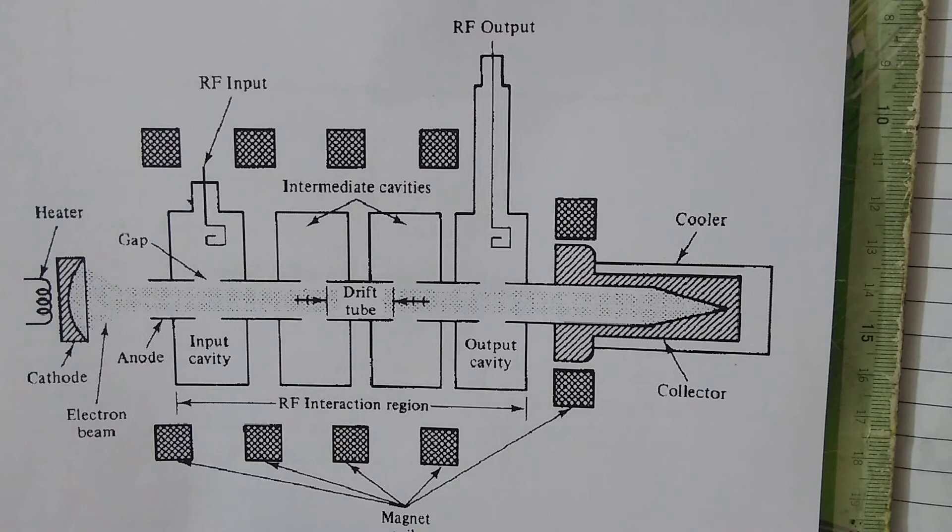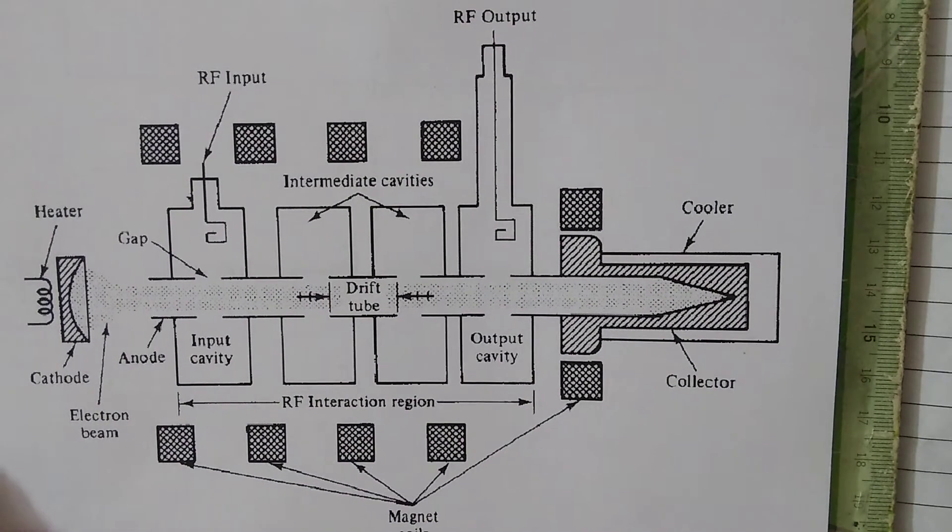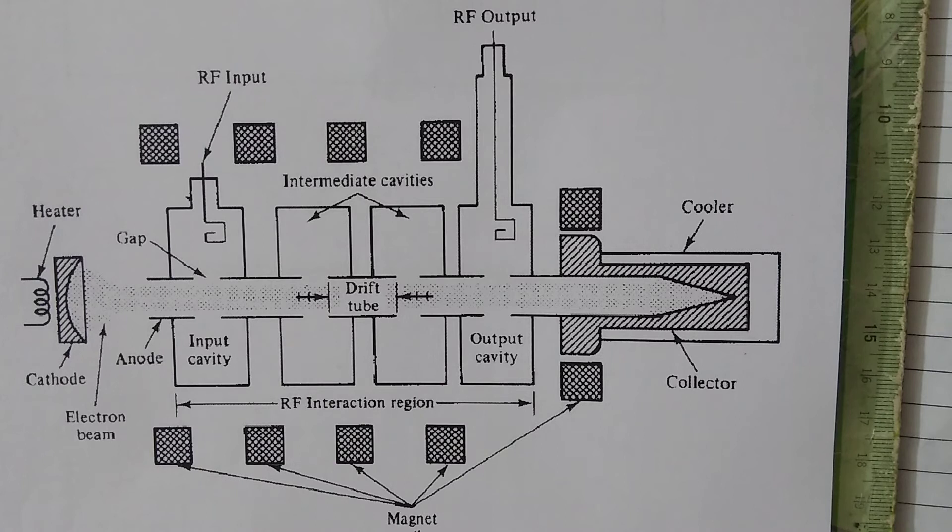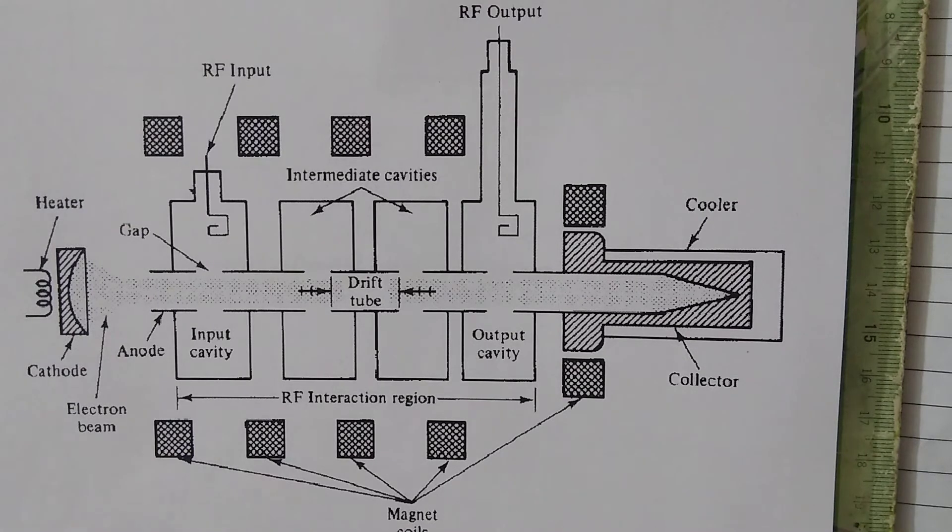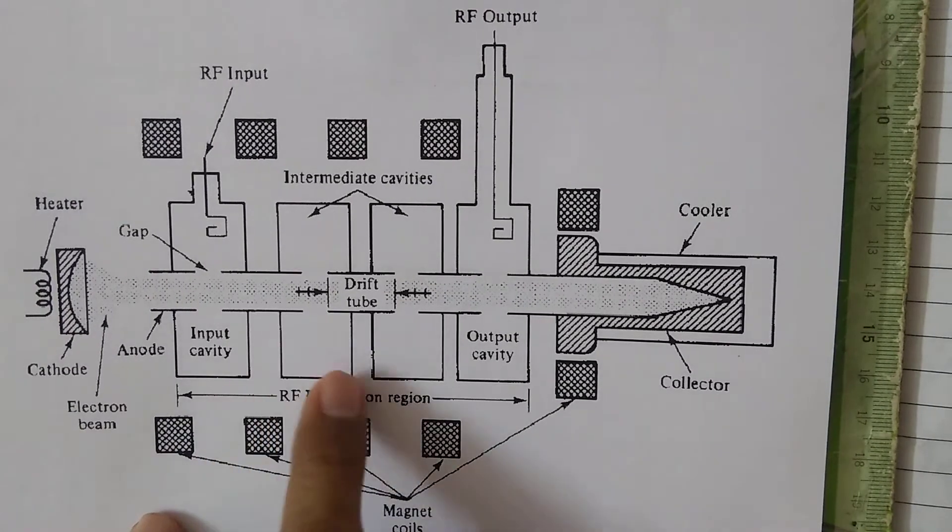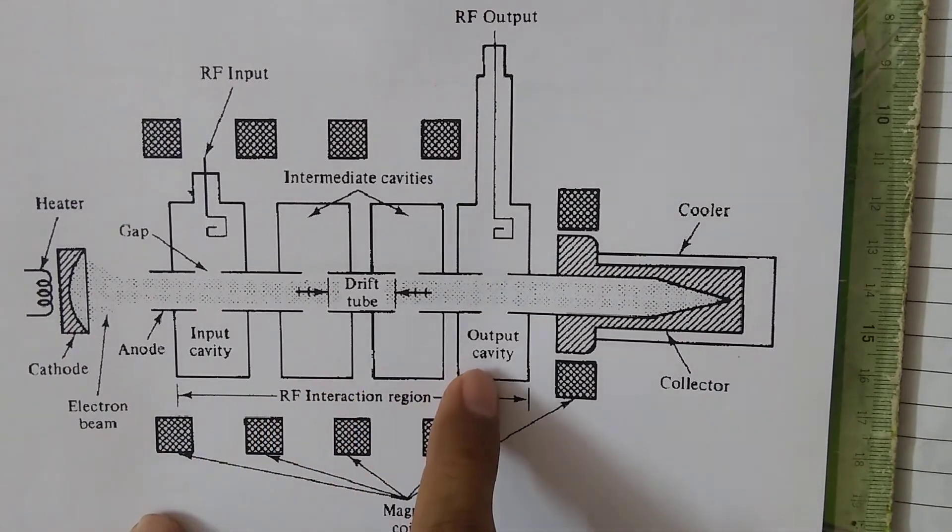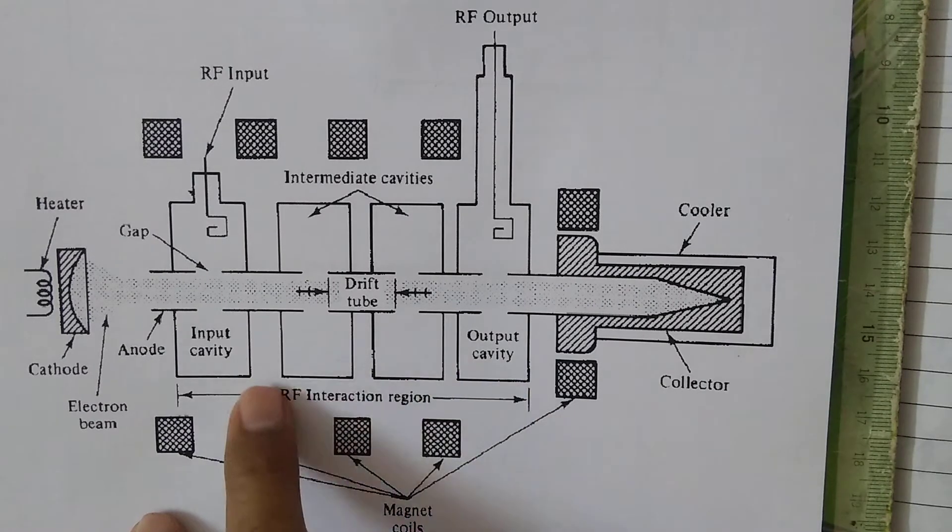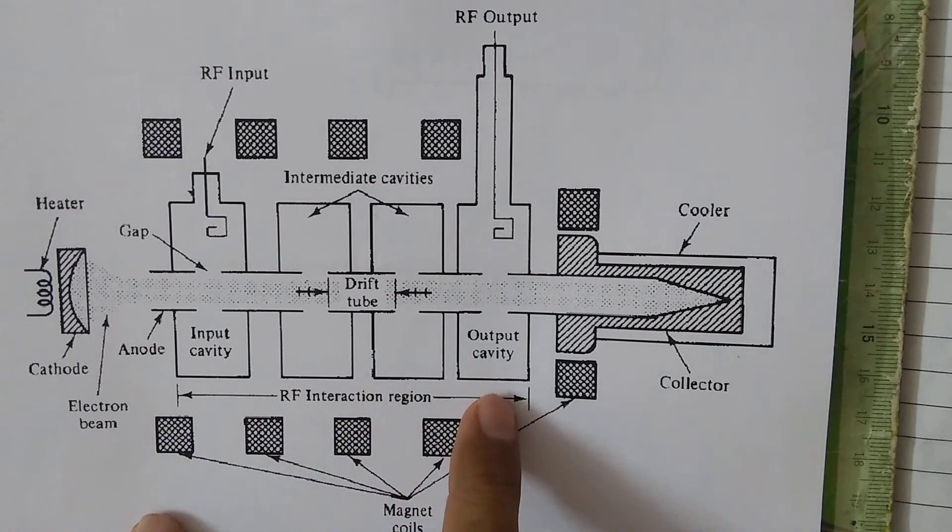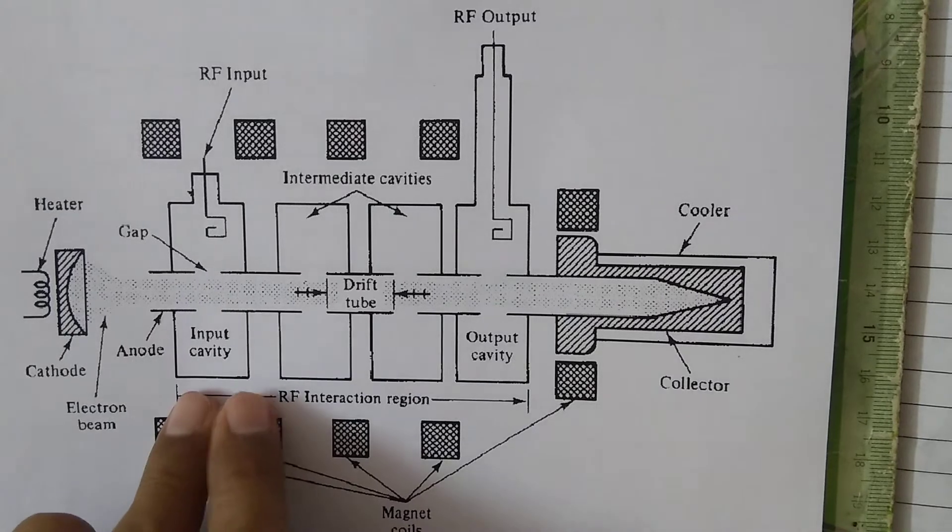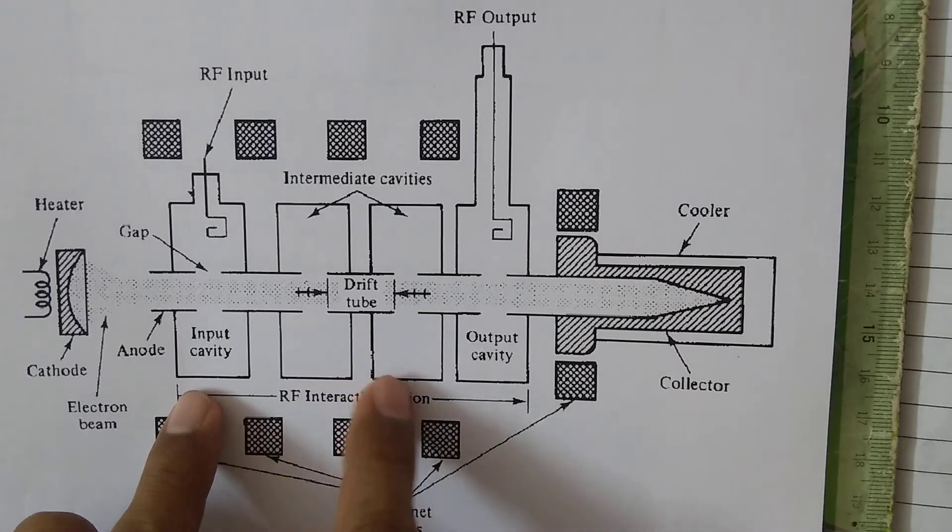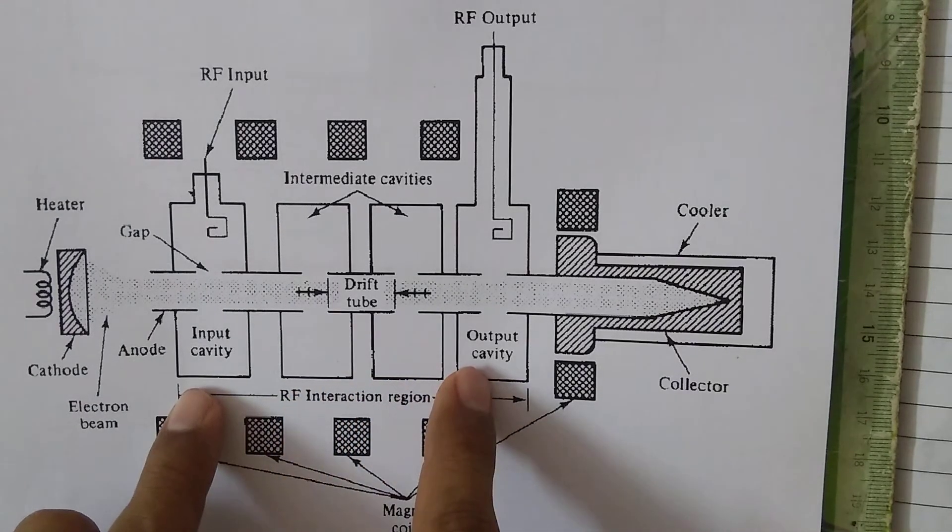There is a concept called stagger tuning, which is used for bandwidth improvement. What is stagger tuning? If all cavities are designed at the same frequency, it results in higher gain but for very narrow-band operation. To improve bandwidth performance, what can we do?